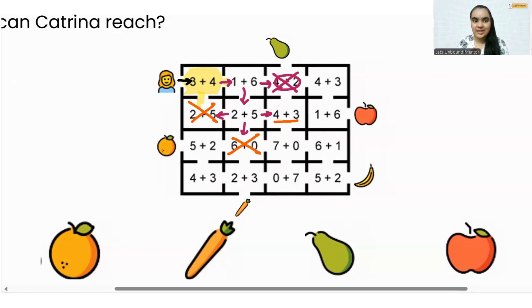There is only one way. 4 plus 3 is 7, so we will go over this room. Okay, now we can go down, correct? Because here is a wall, we cannot jump the wall to reach 1 plus 6. So we will go down. 7 plus 0 is 7, right? And then we can go down or we can go on the right side.